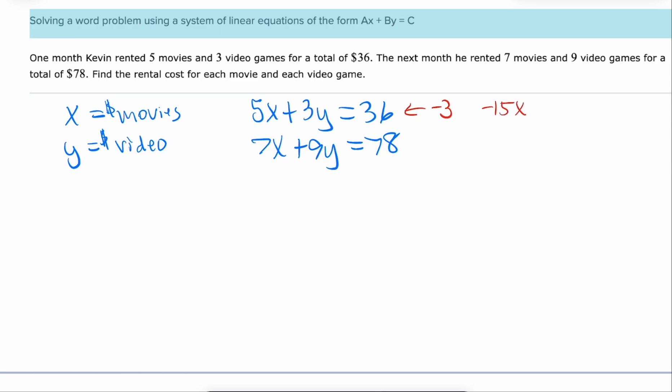So we get negative 15x minus 9y equals negative 108. I'm going to just put the other equation underneath it and then I'm going to combine. Negative 15x plus 7x is negative 8x. My y's have been eliminated. Great. That's exactly what I wanted to happen. And then negative 108 plus 78 is negative 30. And if we divide by negative 8 we get that the cost of a movie is $3.75.